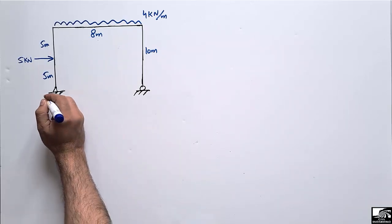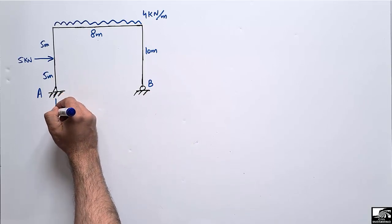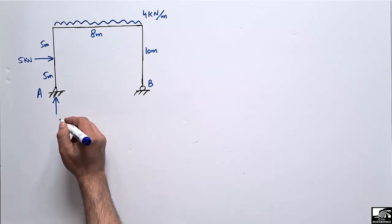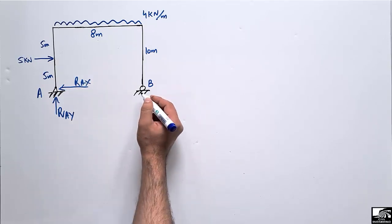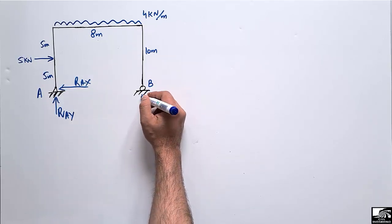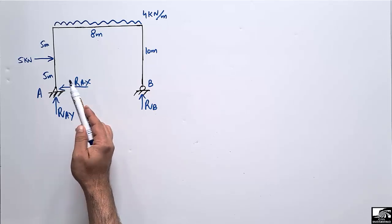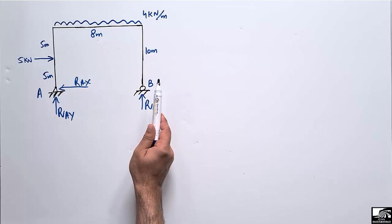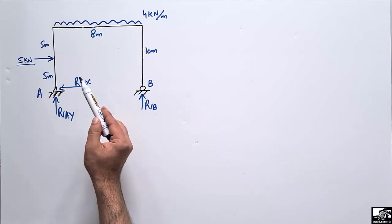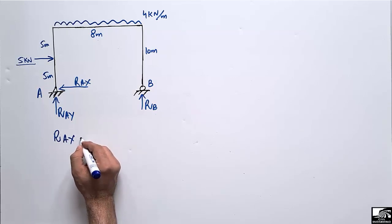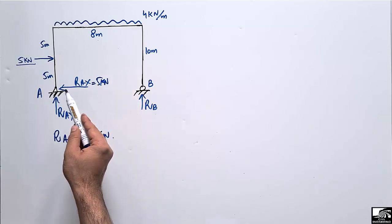The first step is to find out the support reactions. Let's call this support A and this support B. Support A is a hinge support, so it can resist both vertical and horizontal loads — giving reactions RAy and RAx. Support B is a roller support, so it can only resist vertical loads — giving reaction RB. Since there is no other horizontal load acting on the frame except the 5 kN load, RAx simply equals 5 kN.